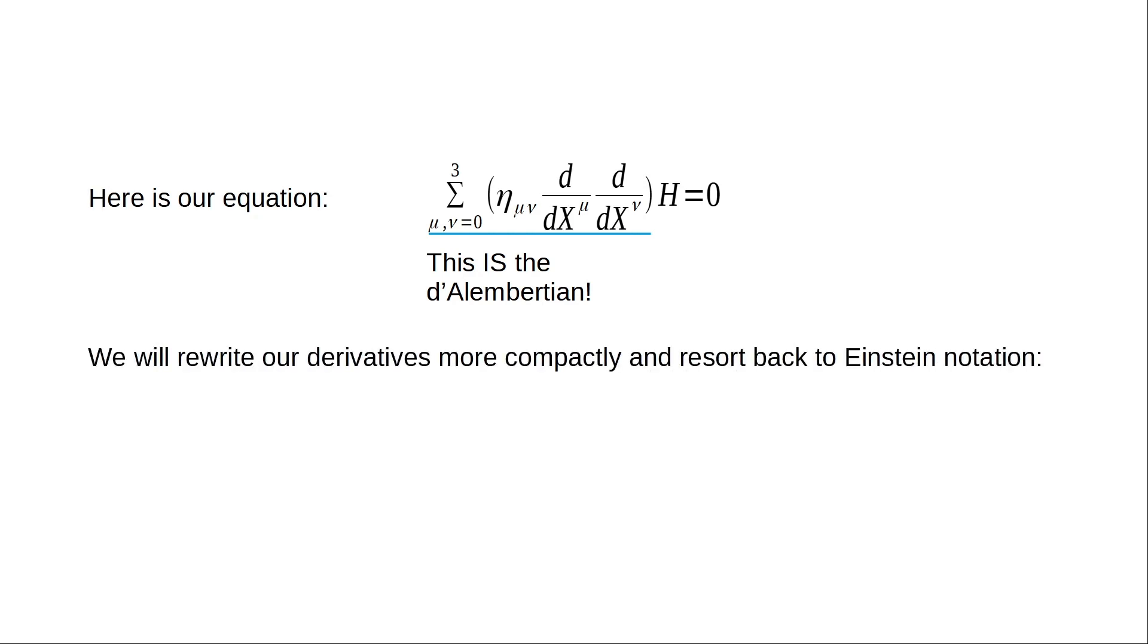We can write our derivatives more compactly and go back to Einstein notation, where we don't have to use sigma notation. It looks much more beautiful this way. In the Einstein summation convention, when you see mu and nu paired together with other elements using those same indices, it's assumed you're summing over the dimensionality of the space you're working in. In this case, a 4D spacetime: zero, one, two, and three.